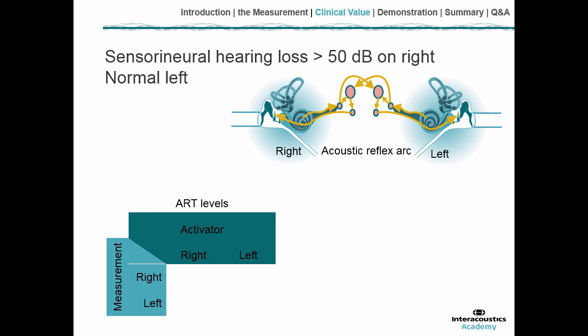This changes, however, if we go to slightly bigger sensorineural hearing losses. From 50 dB and above, we expect that the activity going to the cochlear nucleus is affected — it becomes less, and the acoustic reflex pathway will only be activated if the intensity is raised. So the reflex threshold will raise. In this case, if the right ear is affected, the threshold there will raise, while the left ear remains normal.